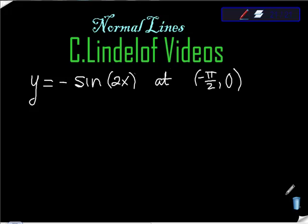C. Lindelof Videos, AP Calculus. Find the equation of the line normal to the function f at a given point. This function is a little bit trickier. It's y equals negative sine of 2x, and we're asked to find the line normal at the point (-π/2, 0). This is actually really easy.